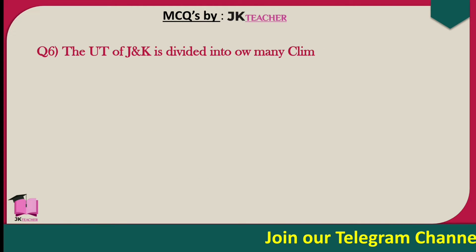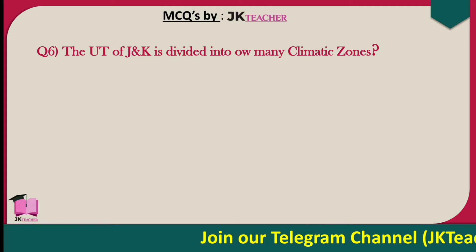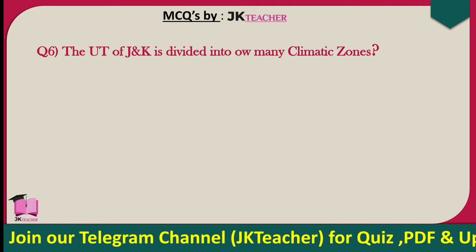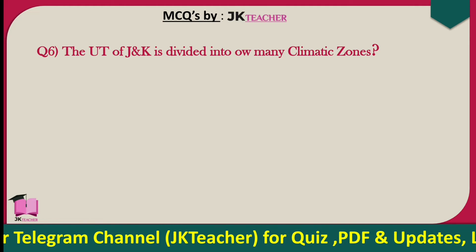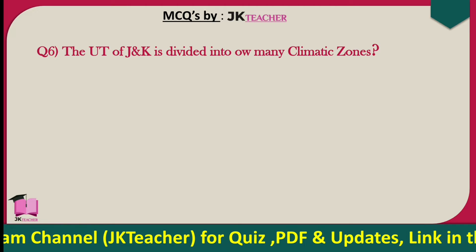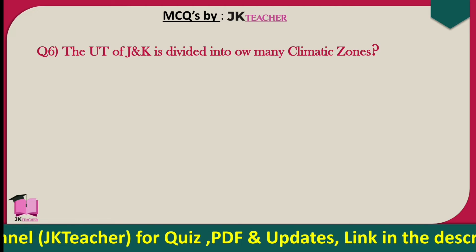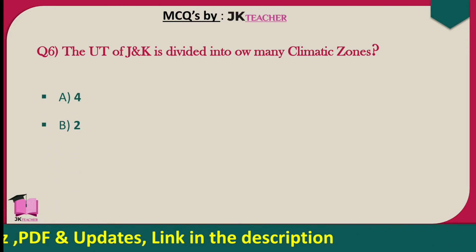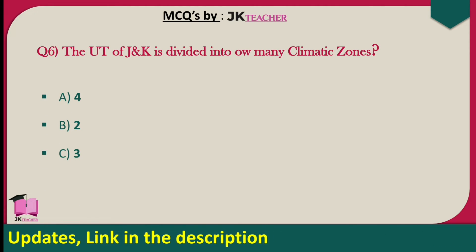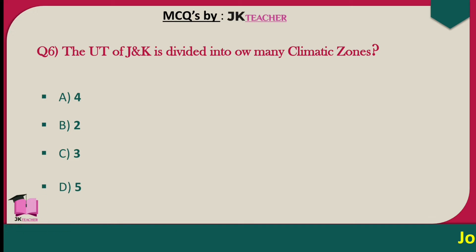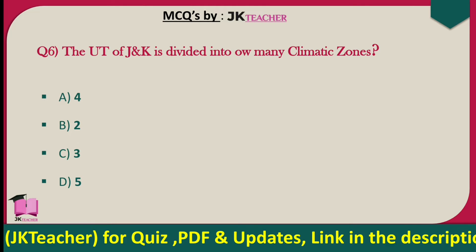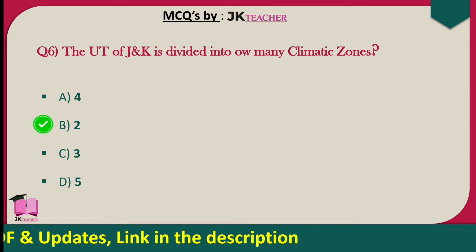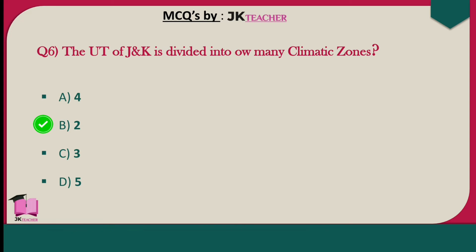The Union Territory of J&K is divided into how many climatic zones? Options are 4, 2, 3, and 5. The right answer is option B — two zones.